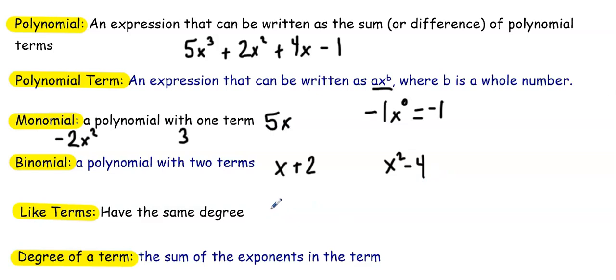Like terms have the same degree, so this will come in handy when we are combining like terms when adding and subtracting polynomials later in this video. For example, -2x² and 3x² are like terms. If I add them together, I would get 1x².